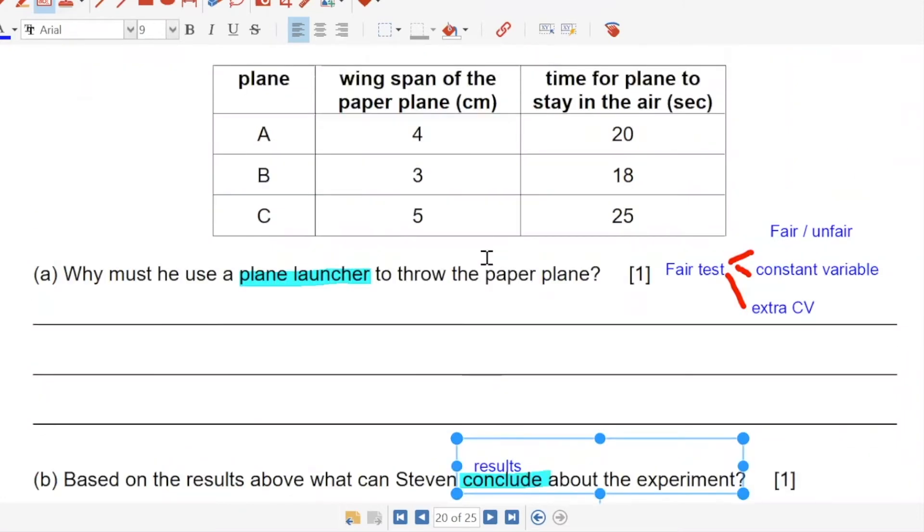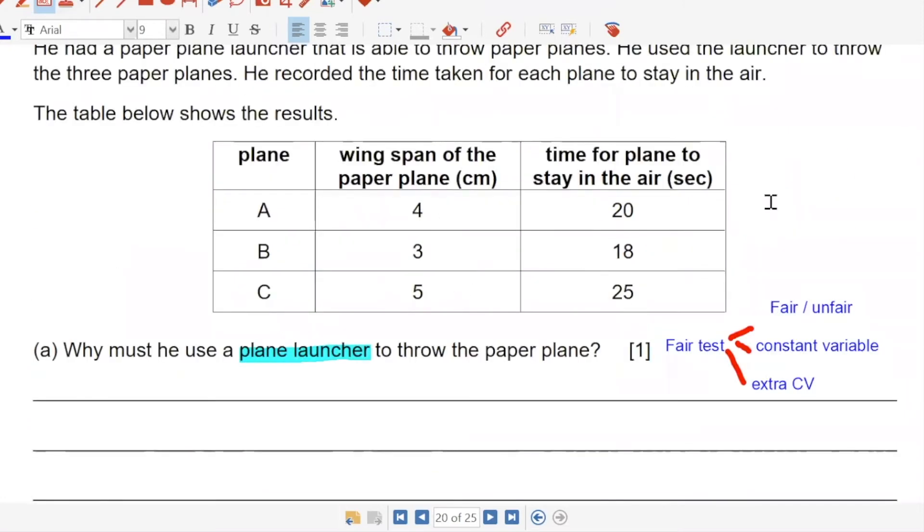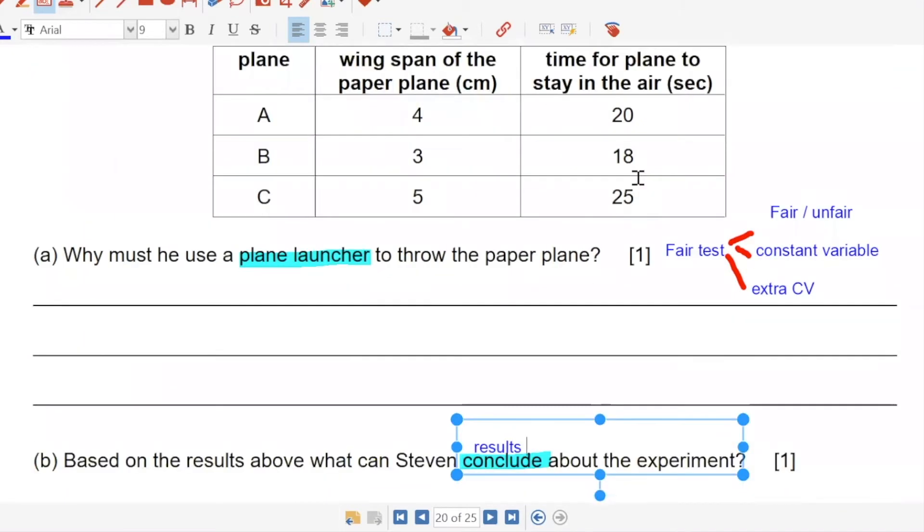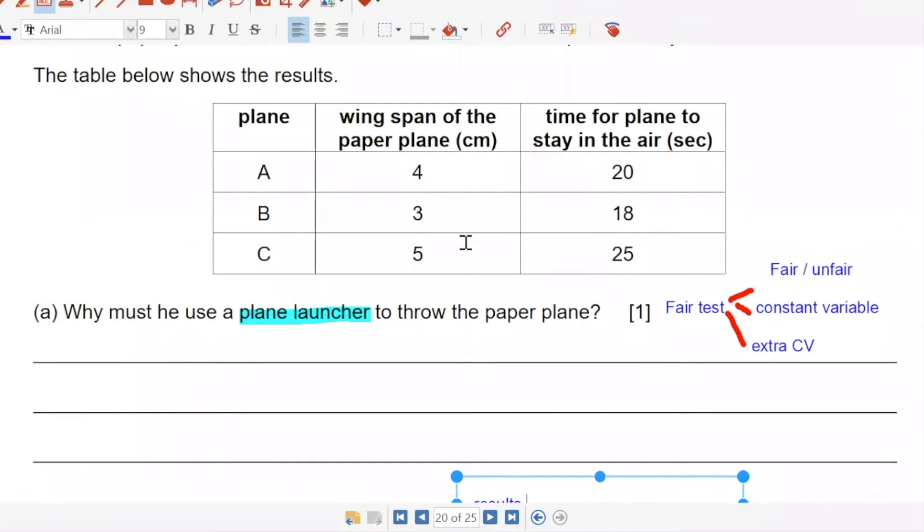So don't tell me, say, oh, the bigger the wingspan, the longer it takes to stay in the air. Then I let my son just say relationship. Relationship, say what? As the wingspan of the paper plane increases, the time taken for it to stay in the air increases. Then it's the same as my relationship, relationship question.